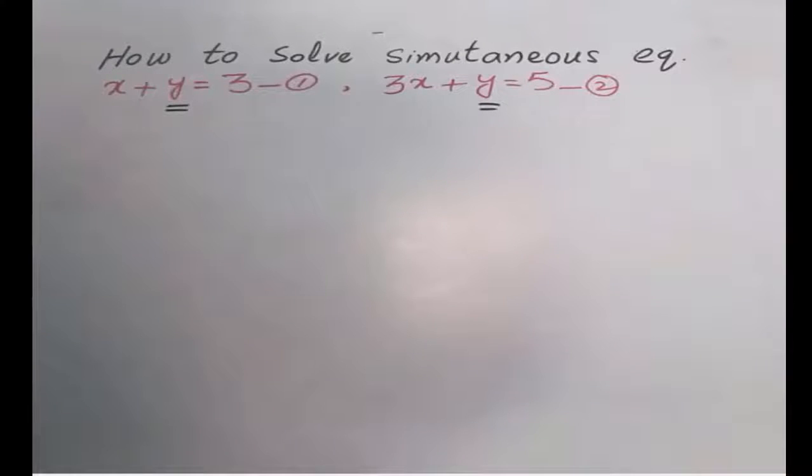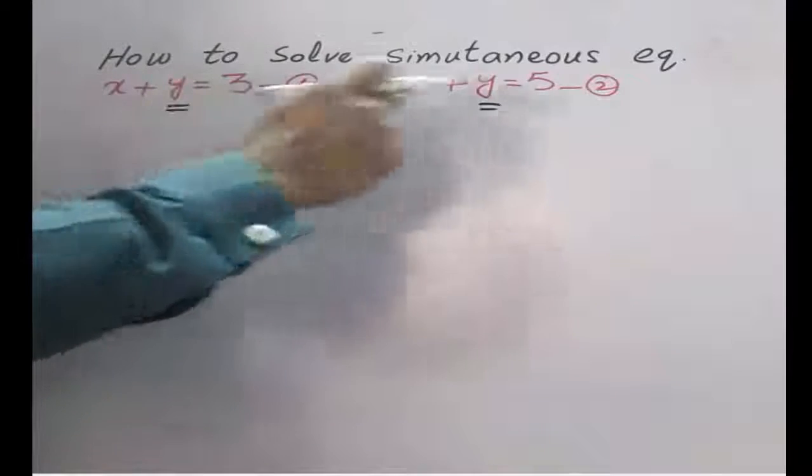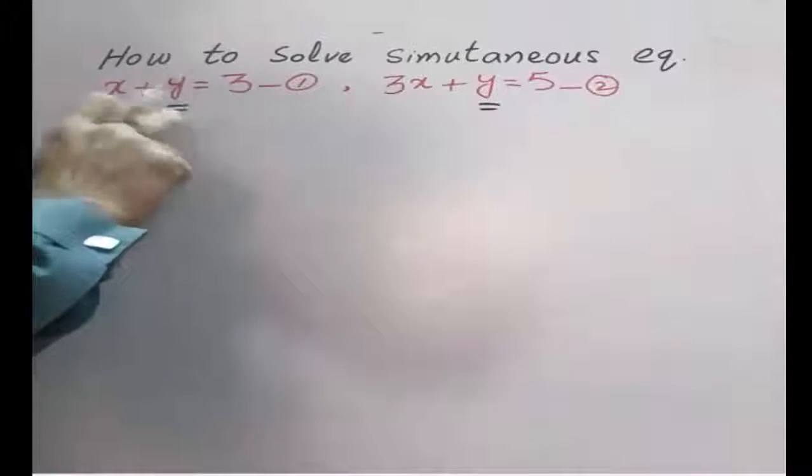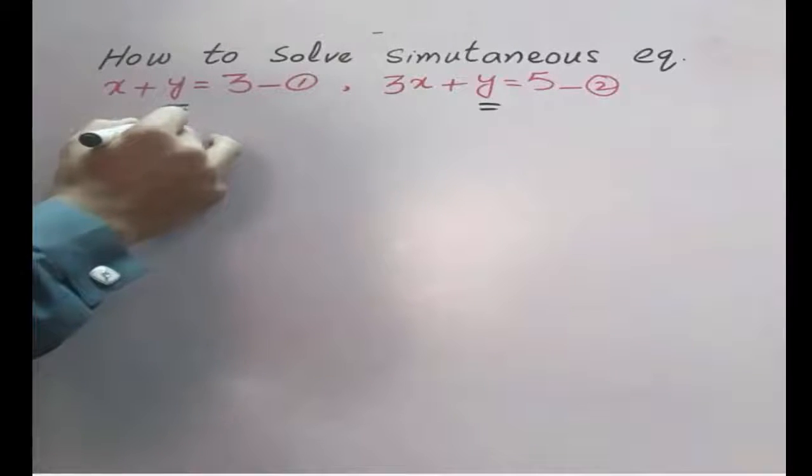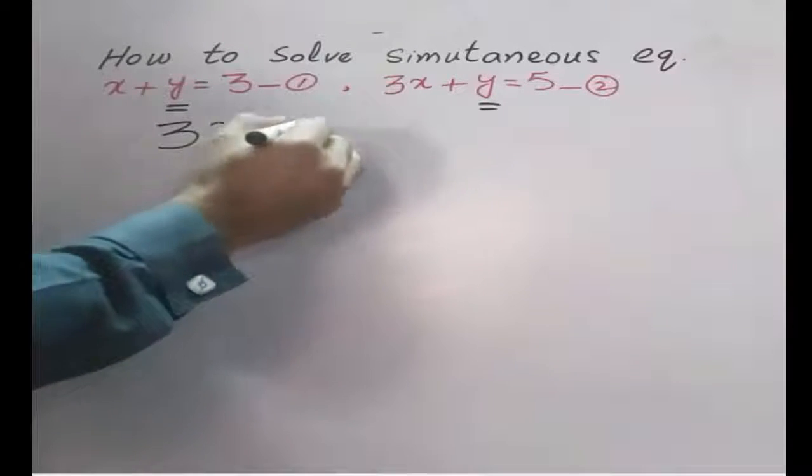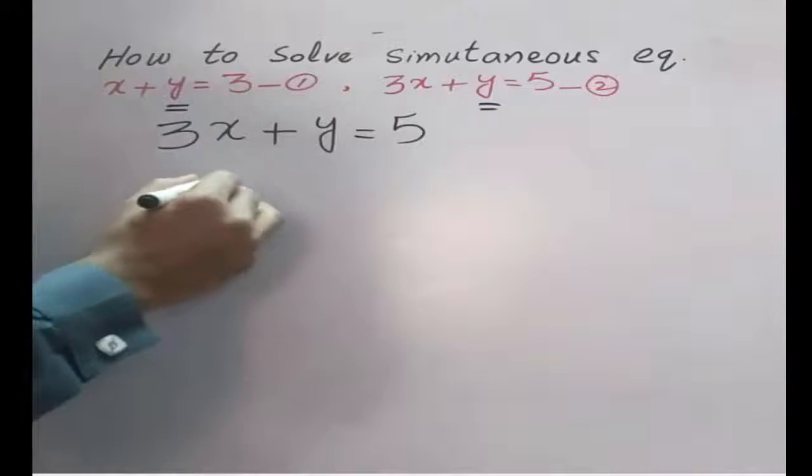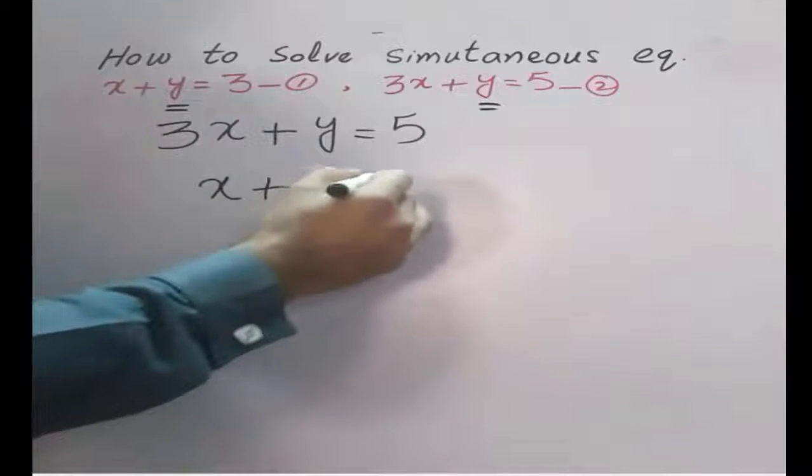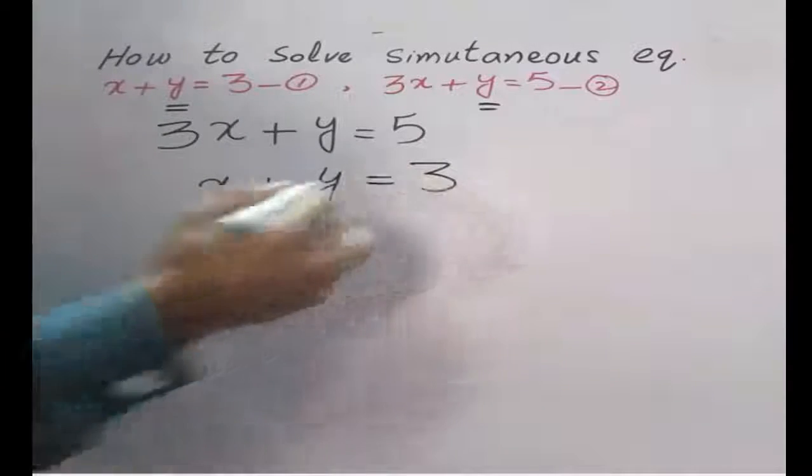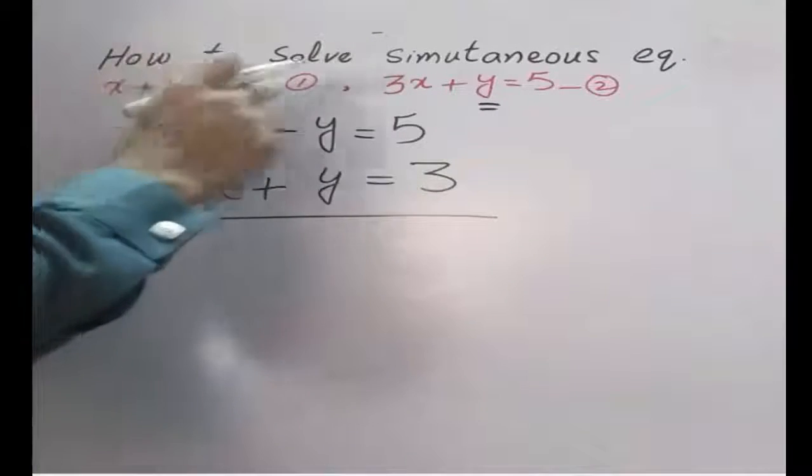For this, simply subtract equation 1 from equation 2 or equation 2 from 1. We are going to subtract equation 1 from 2. 3x plus y equals 5, x plus y equals 3. So we are subtracting equation 1 from equation 2.